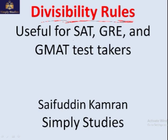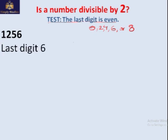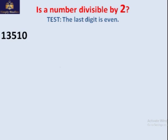Let's do some divisibility rules. Number one: is a number divisible by 2? The rule is the last digit is even — is it 0, 2, 4, 6, or 8? If this is the last digit, then the number is divisible by 2. For example, 1256 — the last digit is 6, it's even, so the number is divisible by 2. If you divide it by 2 there is no remainder.